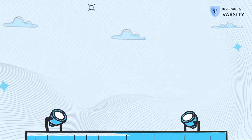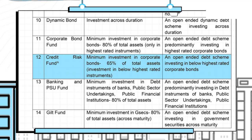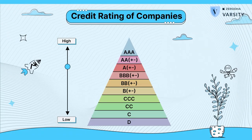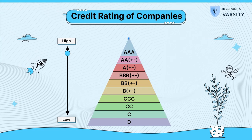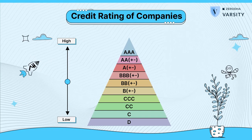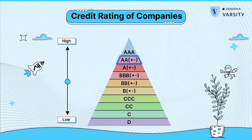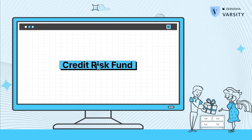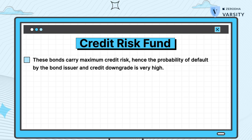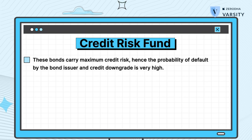Let me talk about another interesting fund before we wrap up our discussion on debt funds — it's called the credit risk fund. Have a look at this extract of the SEBI circular to see how SEBI defines a credit risk fund. SEBI specifies that an AMC running a credit risk fund should invest 65% of its assets in corporate bonds which are AA and below in investment grade. So for example, if the credit worthiness of a company issuing a bond is very good, then the bonds will be rated high — maybe AAA. But if the credit worthiness is questionable, then the bonds issued by such companies will also have a lower credit rating, maybe AA or BB. AA indicates not so good credit worthiness. So a credit risk fund predominantly invests in AA or lower graded bonds, which means the bonds carry maximum credit risk.